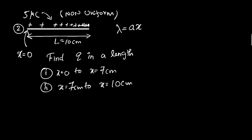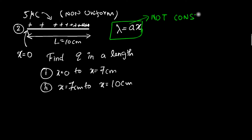The new problem is very similar: the total charge is still 5 microcoulombs and the length is still 10 centimeters, but there is a huge difference — it's a non-uniform charge distribution. The charge density λ is no longer constant; it changes with x. Specifically, λ is proportional to x, so as you go along the line the crowdedness increases, as shown in the diagram. Here 'a' is some constant with units of cm⁻¹, so that λ has units of microcoulombs per centimeter.